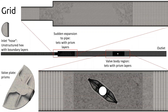This is an example of the grid, showing the unstructured hex in the inlet hose portion with boundary layers. At the sudden expansion it's a region filled with tets, then back to unstructured hex for the straight pipe region. For the flow area around the butterfly plate itself, a slightly higher density tetrahedrons method is used, and then prisms for the plate wall itself.